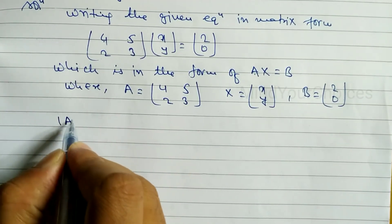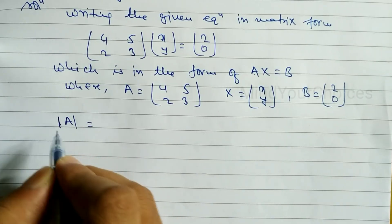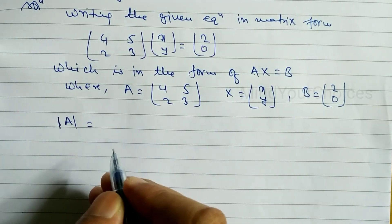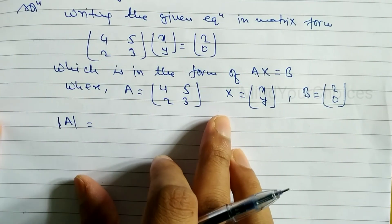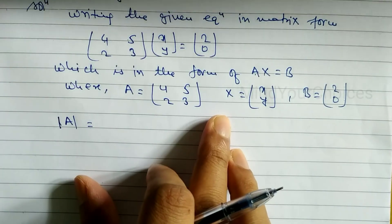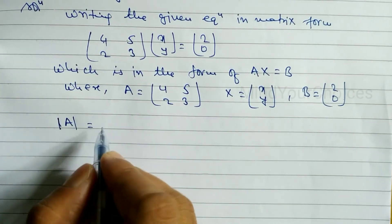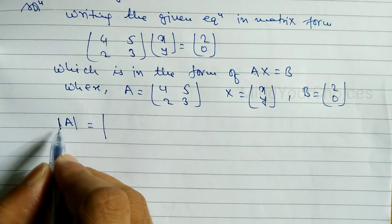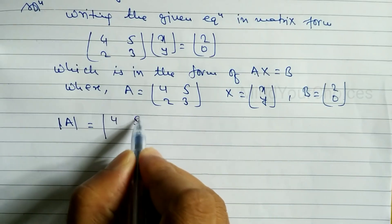Now we have to find the determinant of A to check whether A is a singular or non-singular matrix. If it is singular, the linear equations have no solution. If non-singular, then x and y have a unique solution.